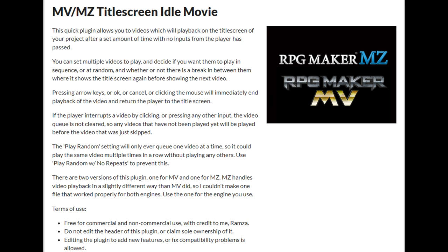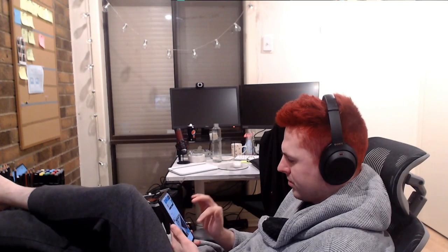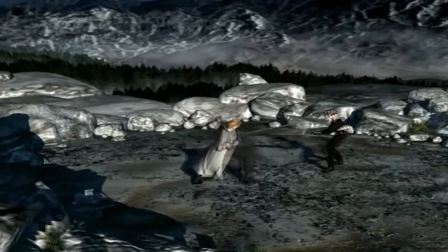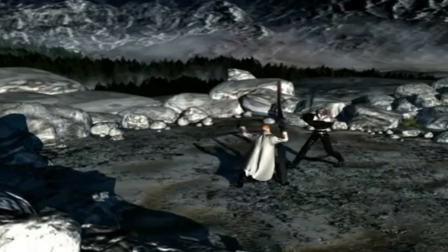Number 5: Ramza's Title Screen Idle Movie. This plugin allows you to play a movie over your title screen if the player is idle for long enough. Let's say the player idles for two minutes — all of a sudden, an awesome movie pops up. It could be an exposition dump or a cool action fight scene between the main protagonist and the villain. I think this is an awesome plugin that adds depth to your game. If you know of any other cool free RPG Maker MZ plugins, let everyone know down in the comments so we can all have a look.